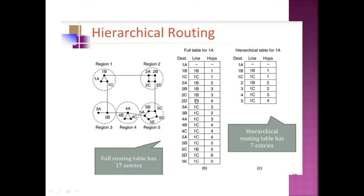From 1A to 3A it needs 3 hops: 1A to 1C, then 1C to 3A. From 1A to 3B it needs 3 hops similarly. From 1A to 4A it needs 1A to 1B, 1C to 3B, then 3A to 4A — so 3 hops. The same applies for 4B and 4C. This full table for router 1A lists the number of hops to reach each particular router.